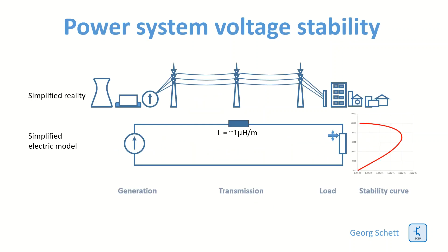In order to explain the concept of voltage stability, I have simplified a reality model here. On the left side we have a power generation plant, then we have a transmission line — it may be several tens or even 700 km long — and then we have a load. A load could be a city, a village, whatever. I have built a very simplified electric model where we have a power source, which is a voltage source, then a reactance modeling the transmission line, and then a load which is a resistance.